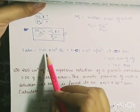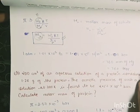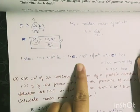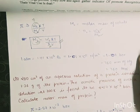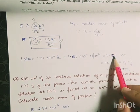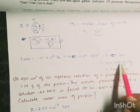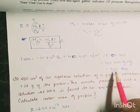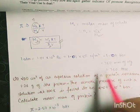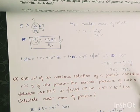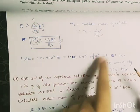Some useful pressure conversions for numericals: 1 atmosphere = 1.01 × 10⁵ Pascal = 1.01 × 10⁵ N/m² = 1.01 bar = 760 mm of mercury = 760 torr. These are conversions of atmospheric pressure that are used in osmotic pressure problems.